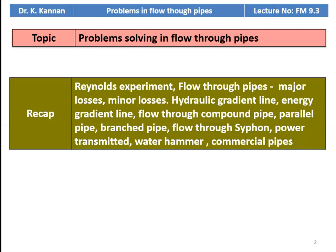In the earlier lectures, we discussed the theory part of flow through pipes. The topics we discussed are Reynolds experiment, flow through pipes, major losses, minor losses, hydraulic gradient line, energy gradient line, flow through compound pipe, parallel pipe, branched pipe, flow through siphon, power transmitted during water flow in a pipeline, water hammer effect, and commercial pipes.